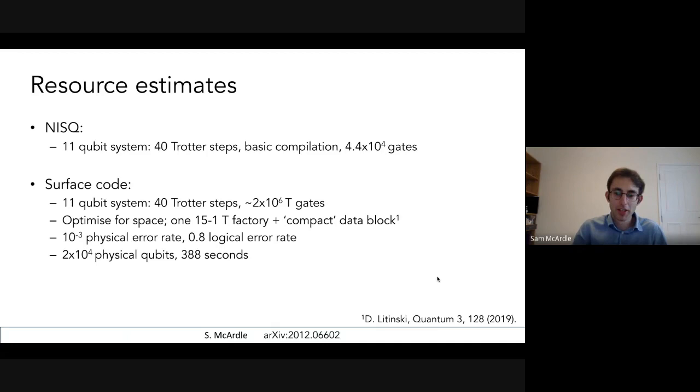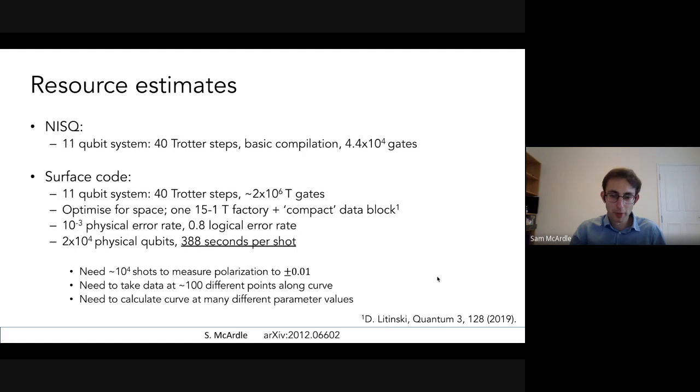If we move into considering perhaps like a small error corrected calculation. This is just like a rough back of the envelope attempt at a surface code calculation. You find you need about 2 million T gates for this small problem. Again, this could probably be dropped quite a bit. If I try and optimize for space using the smallest footprint possible, use reasonable physical error rates, but perhaps quite optimistic logical error rates inspired by the circuit level noise simulations. You find you need about 20,000 physical qubits and the algorithm takes six minutes to run. So that doesn't sound horrendous until you consider that we need to take maybe 10,000 shots to measure each data point accurately. You need to take a hundred data points along the curve and you need to calculate this curve for loads of different parameter values. So if each time of running the circuit takes six minutes, this whole process is going to take days.